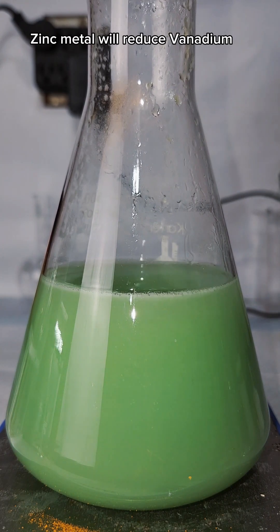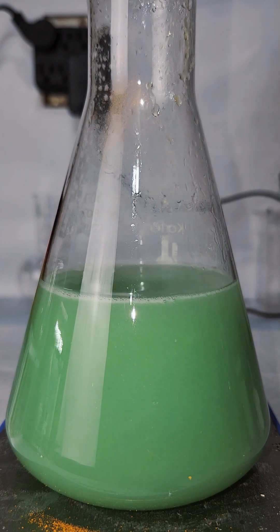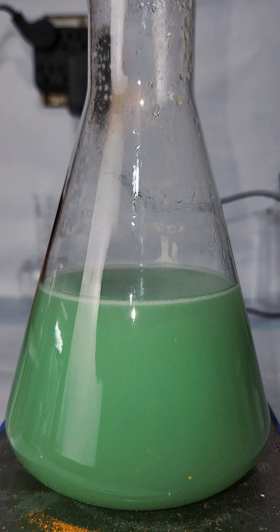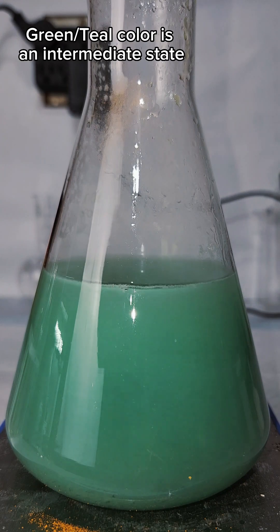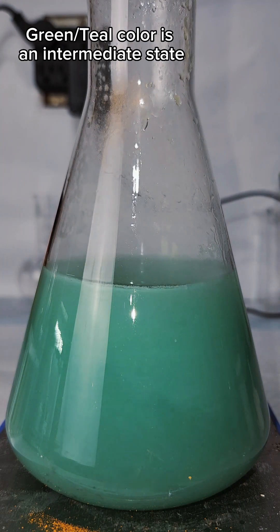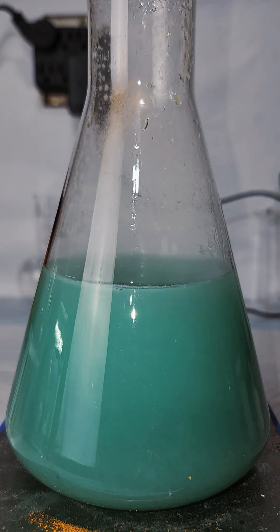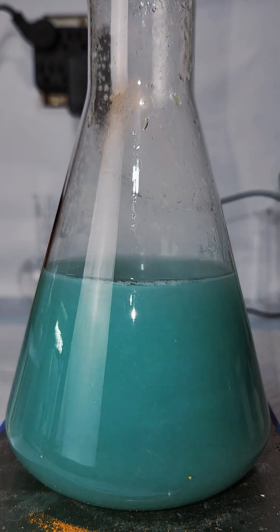This demonstration relies on the fact that different metals have different affinities for electrons, which we call oxidation reduction potentials. Zinc metal has a lower affinity for electrons than most metals, and will actually give up electrons to vanadium to reduce its oxidation state.